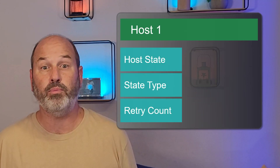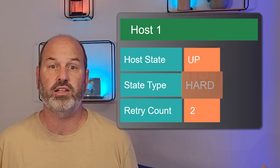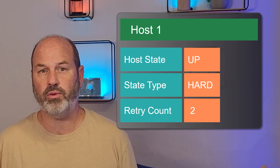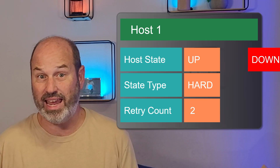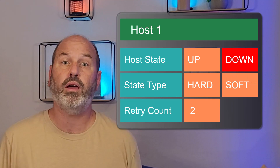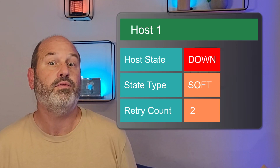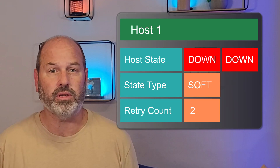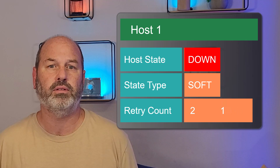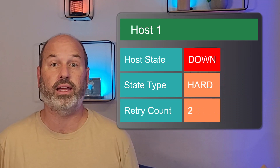When a host or service has been working properly and stably for a while, we say it's in a hard state, which just means we're sure about it. Now suppose a new host check response arrives with a different state — down. Because it's a different value, we switch from the hard state to the soft state, meaning we're no longer sure. If the next check result is the same and we're in the soft state, then we decrease the retry count. If the count is now zero, we change the hard state and reset the retry counter.